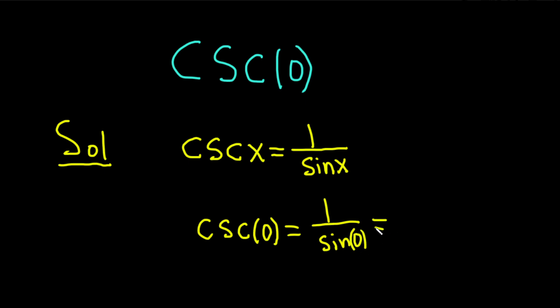And then here is the problem. Sine of 0 is equal to 0. So you get 1 over 0. So this is no good. This is undefined.